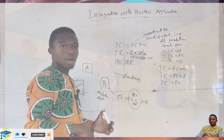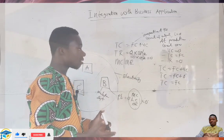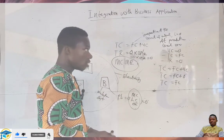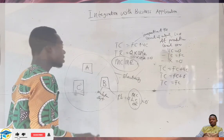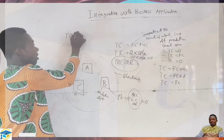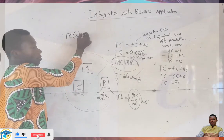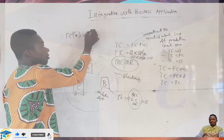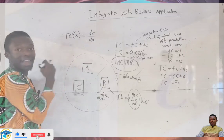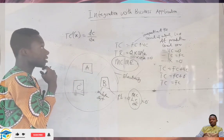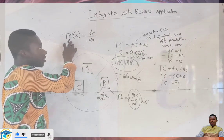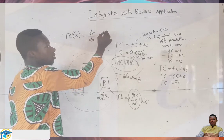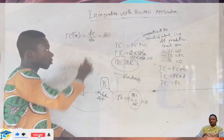That is the concept we build in the theory of production, and these are the things established when discussing differentiation with business applications. We also spoke about marginal cost and marginal revenue. If I have the total cost function TC(x) and I differentiate it, it becomes d(TC)/dx — differentiate cost with respect to the unit x.